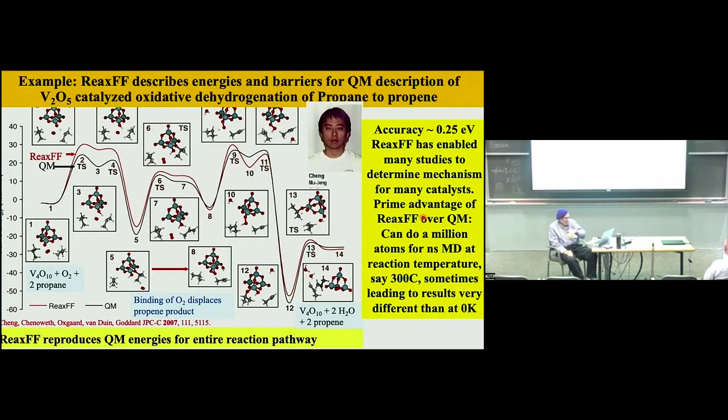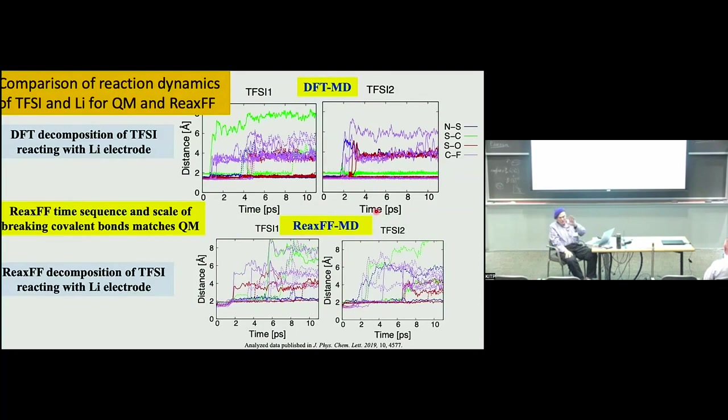For the case of interest, where the TFSI anion is reacting with lithium metal, we first do that with quantum mechanics for a couple hundred picoseconds. Then we compare that to the reactive force field and adjust it so it correctly describes the evolution — where sulfur goes from oxidation state +6 to +4 to +2 and finally has lithium neighbors. Then we can apply that to look at SEI formation.